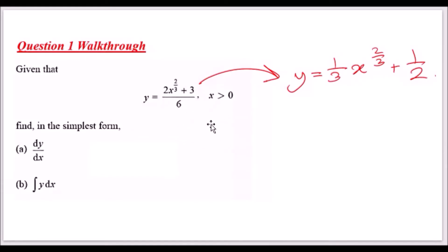I split this into two fractions: 2 over 6 times x^(2/3) plus 3 over 6. Tidying that up, 2 over 6 gives you a third and 3 over 6 gives you a half, so you should get y = (1/3)x^(2/3) + 1/2.